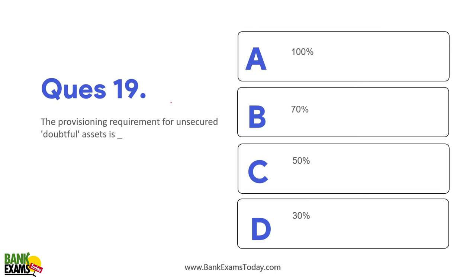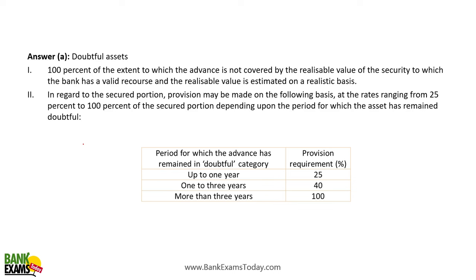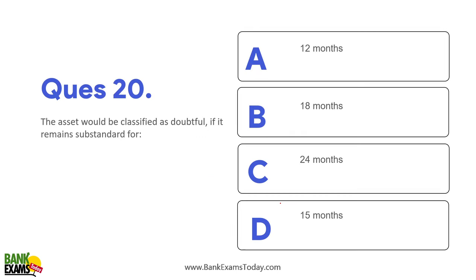The provisioning requirement for unsecured doubtful assets is 100%. For secured doubtful NPAs: if an asset is doubtful for up to one year, provisioning is 25%; for 1 to 3 years, 40%; for more than 3 years, 100%. An asset is classified as doubtful if it remains substandard for more than 12 months.